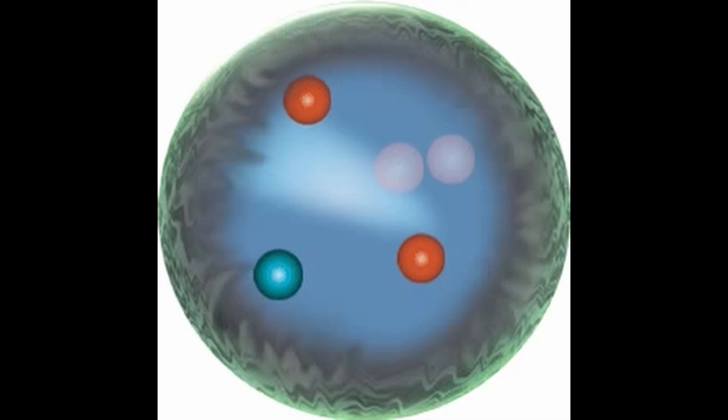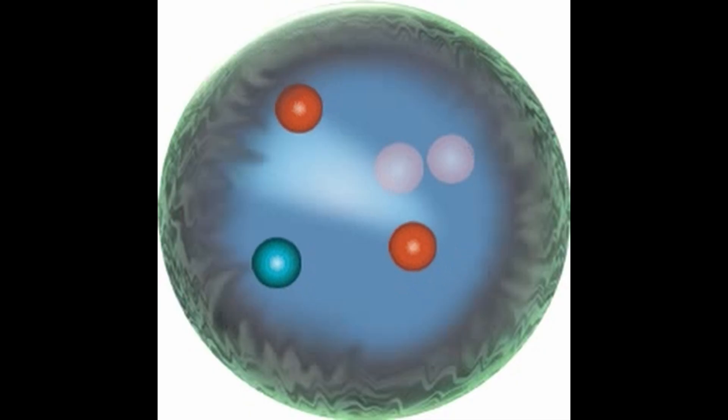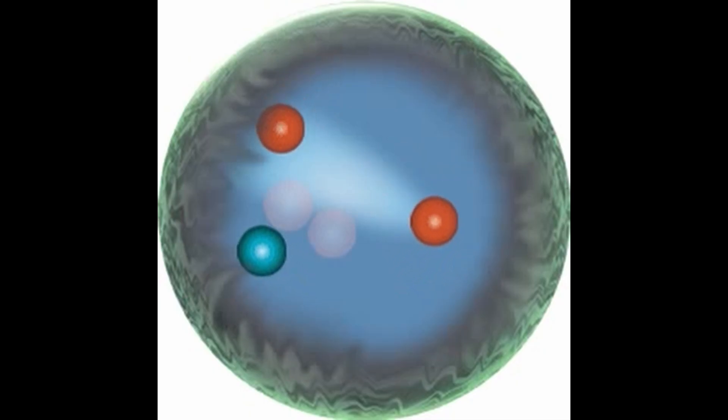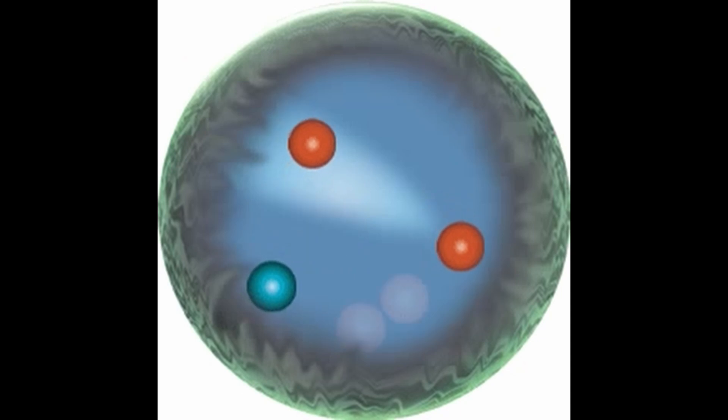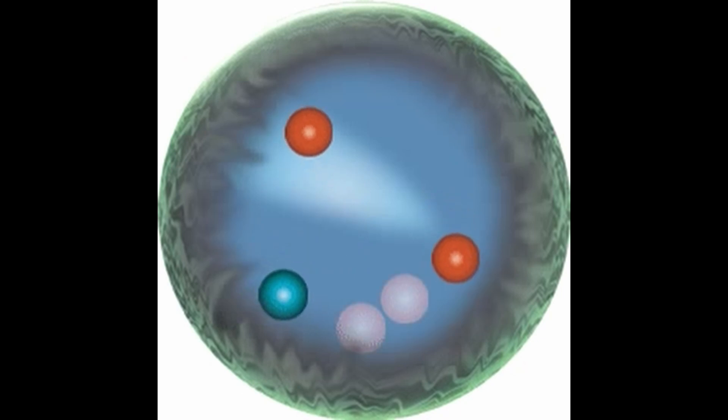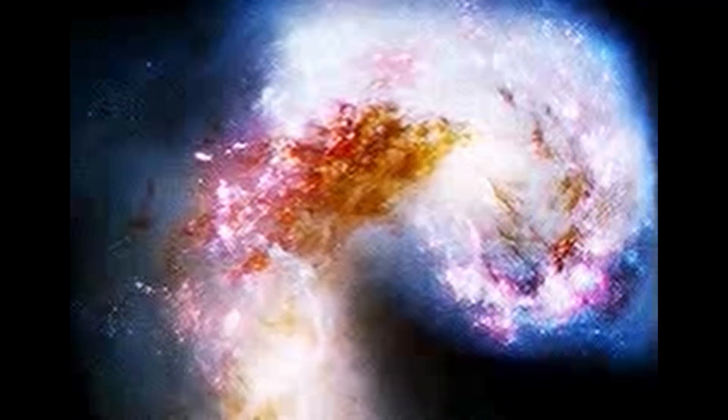At absolute zero, a system reaches its lowest possible energy state, meaning the kinetic energy of particles is minimized but not entirely zero due to quantum mechanical effects. Even at absolute zero, particles retain a minimal amount of energy known as zero point energy.